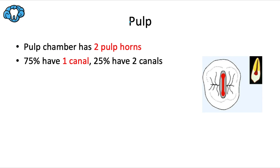Let's talk about the pulp. We have two cusps, so we expect two pulp horns — that's pretty typical. However, 75 percent of maxillary second premolars have one canal because there's usually just one root, while 25 percent have two. An easy way to remember this: the majority of first premolars have two canals, while the majority of maxillary second premolars typically have only one canal — the one and the two are opposite of each other.